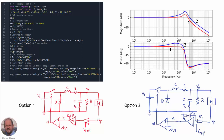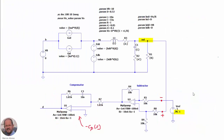We can see the differences between the two implementations: the gain in the second option (operational amplifier) is higher than in the first option, and the phase increases and then decreases differently.